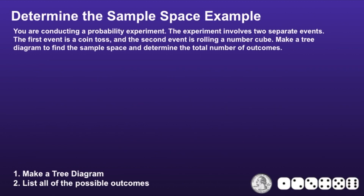Determine the sample space example: You are conducting a probability experiment involving two separate events. The first event is a coin toss, and the second event is rolling a number cube. Make a tree diagram to find the sample space and determine the total number of outcomes. Step one is to make the tree diagram. When we toss a coin, there are two possible outcomes: heads and tails.